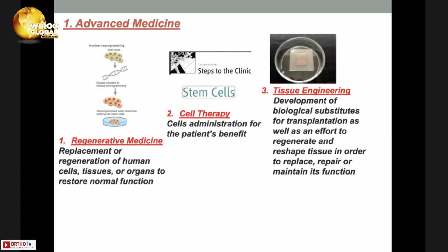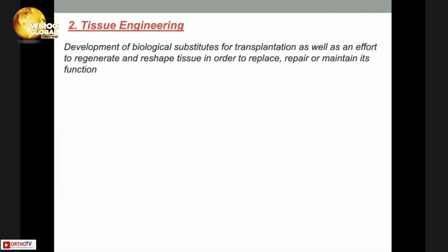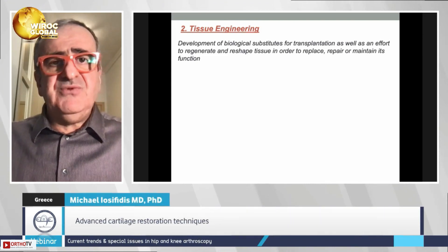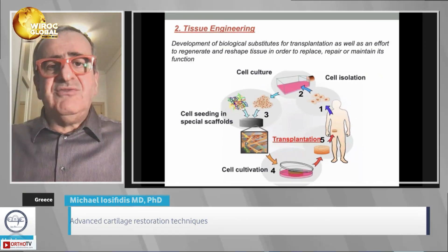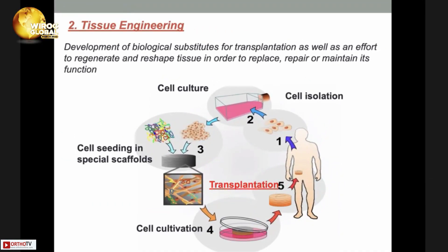Under the title of advanced medicine, we also talk about tissue engineering, which is the development of biological substitutes for transplantation as well as an effort to regenerate tissue to replace and repair damaged areas. We can draw a cycle where first we isolate cells from the human body, culture and multiply them, then seed them in special scaffolds, continue cultivation on the scaffold, and finally transplant the construct into the human body.